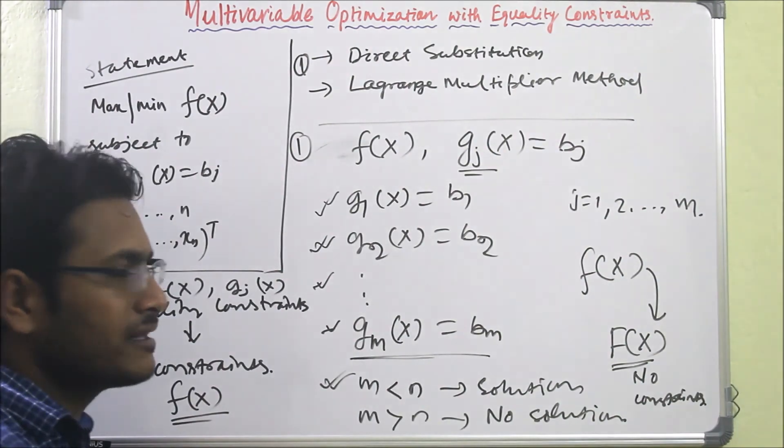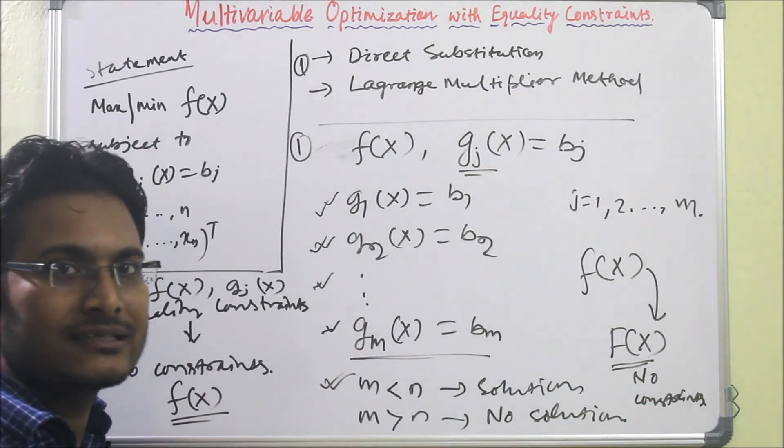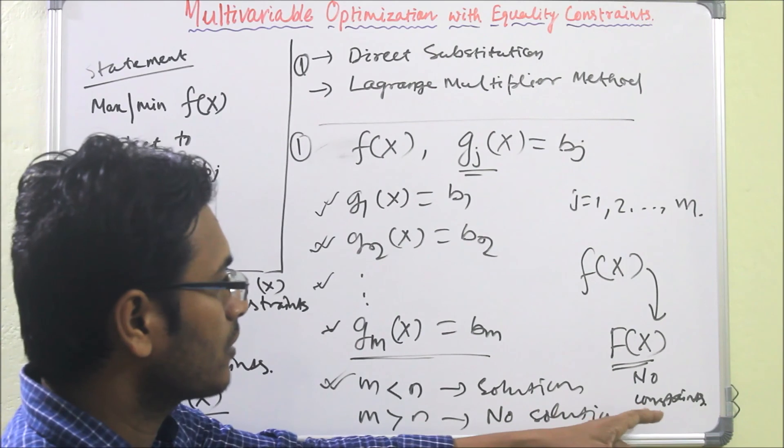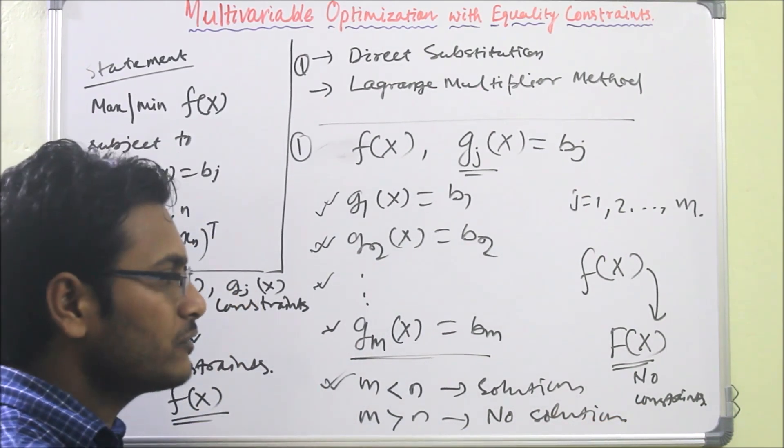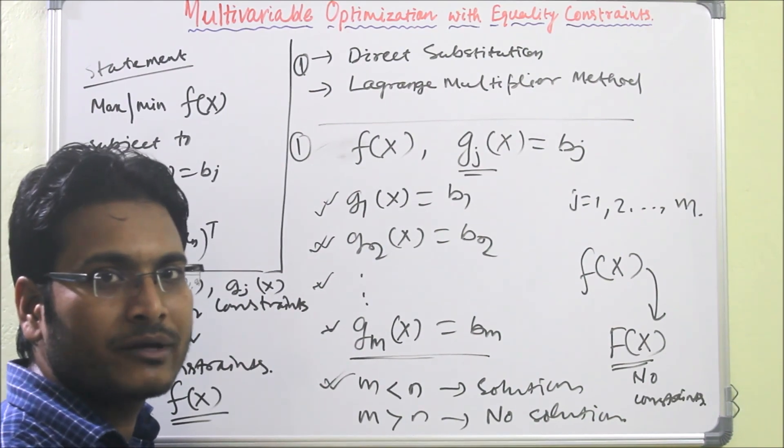Then the usual classical method that we know, we have to apply for the new no constraints problem. Then we can get the solution. Next we will solve one problem, then the idea will be clear.